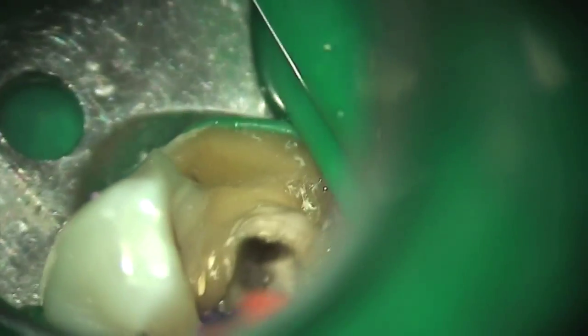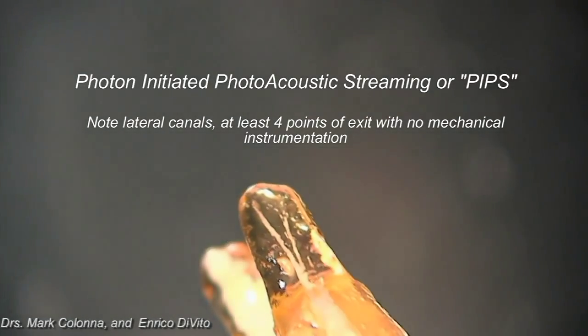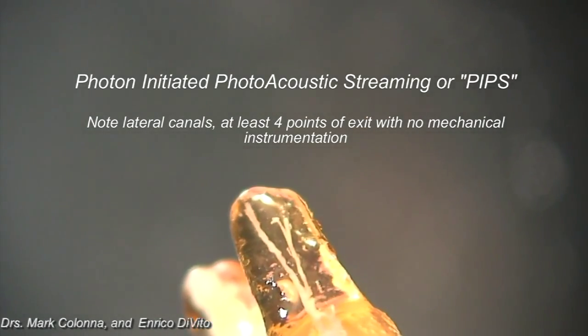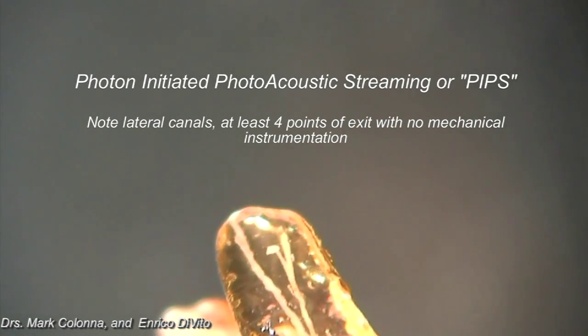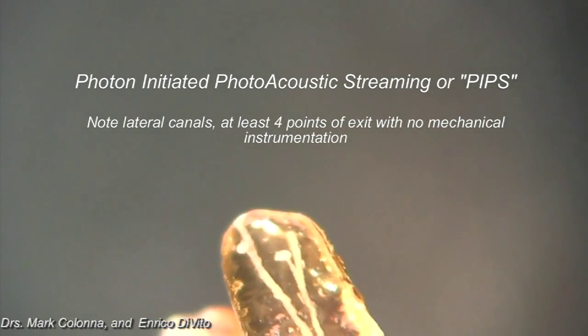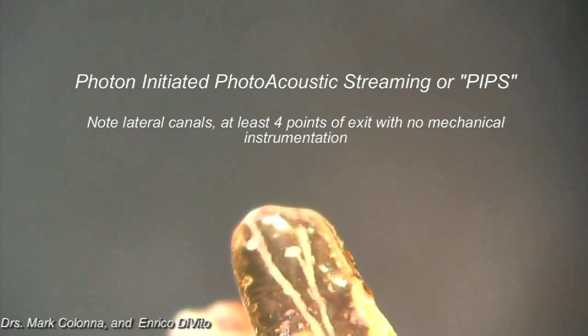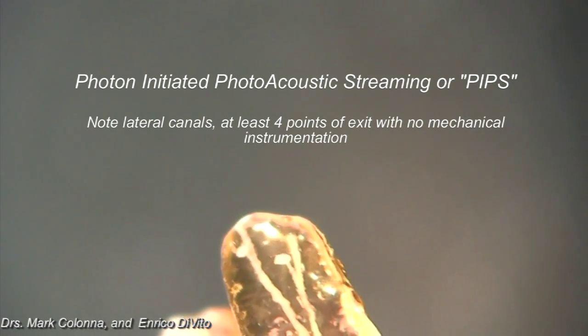We were extremely excited when we saw this because we thought: if we can just get the PIPS effect placed in any one of these canals, the effect could be seen in all the canals. You can see the nice bubbling and moving of the fluid in the chamber. And the question is: what's happening down in the root system? What's happening to the fluid? Where is it going? How is it cleaning out the canal system?